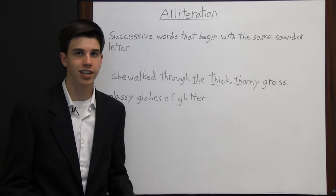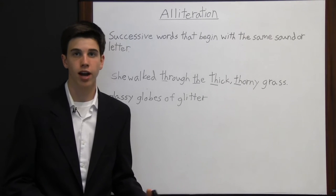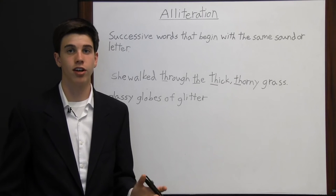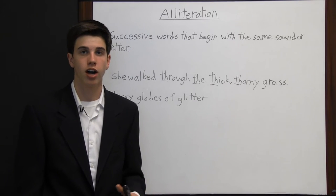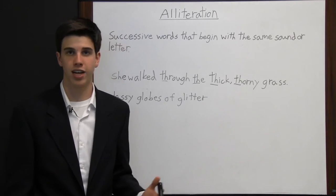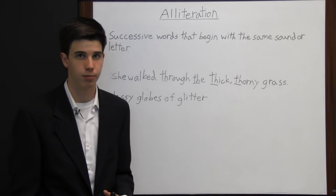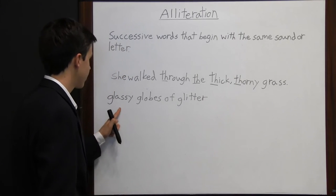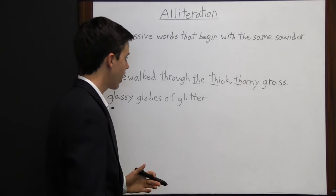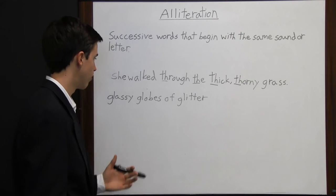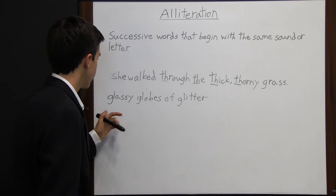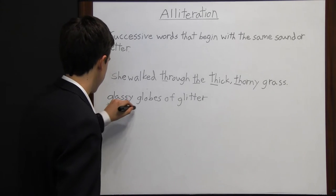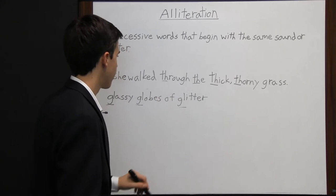This technique is used in the opposite way in poetry. Many times letters or sounds that sound good three or four times in a row are used to give the poetry a musical sound, so that it sounds very pleasant to the ear. Take a look at another example: "glassy globes of glitter." Here the author is trying to describe someone's beautiful eyes using the phrase glassy globes of glitter — this is an alliteration because these three words all start with "gl."